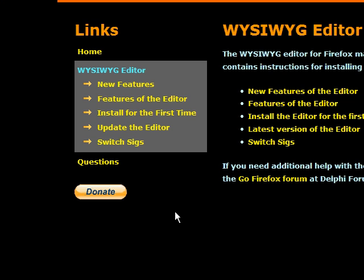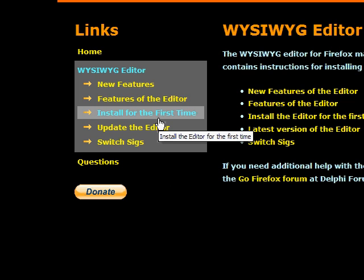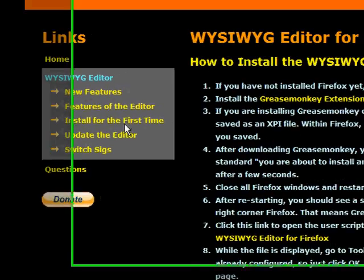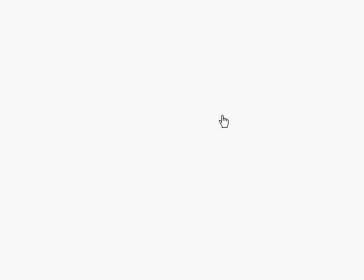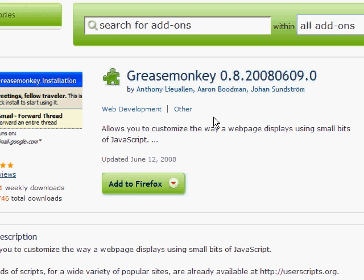That will take you to a page with some choices. You're going to click install for the first time. They give you step-by-step instructions — they've done a really great job here. You're going to click Greasemonkey extension for Firefox, and that is going to take you to the Firefox add-on page, specifically to the Greasemonkey page.